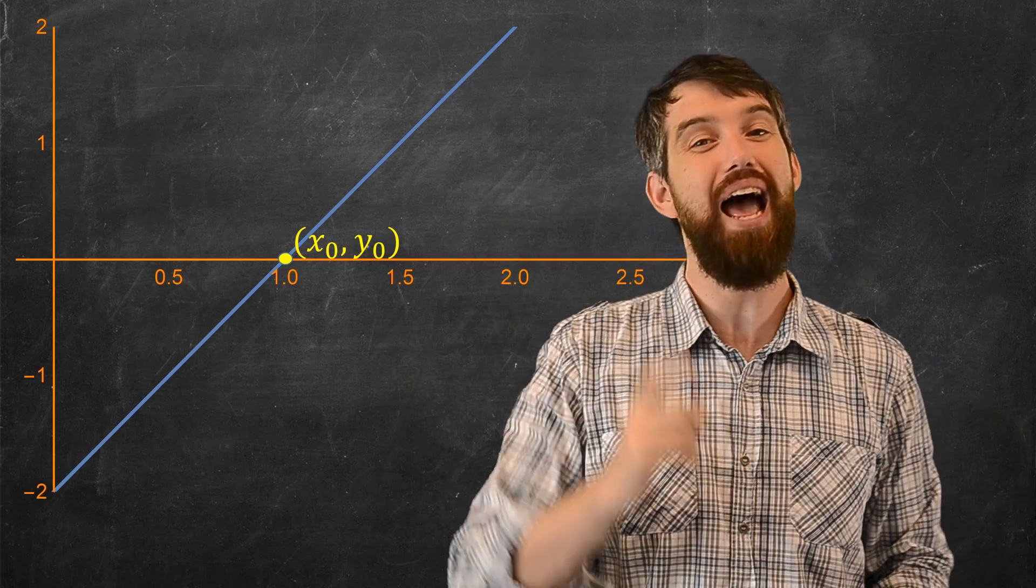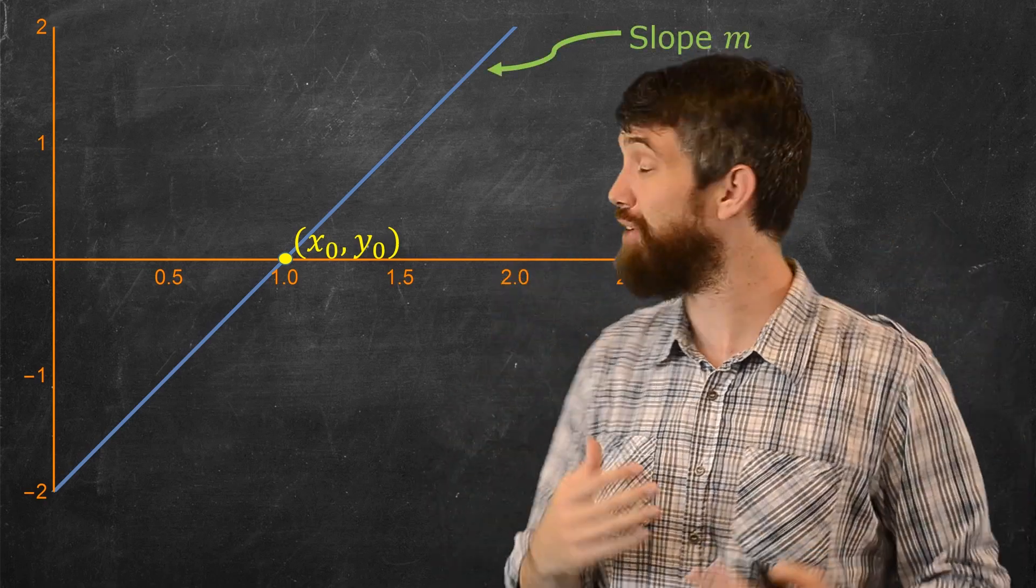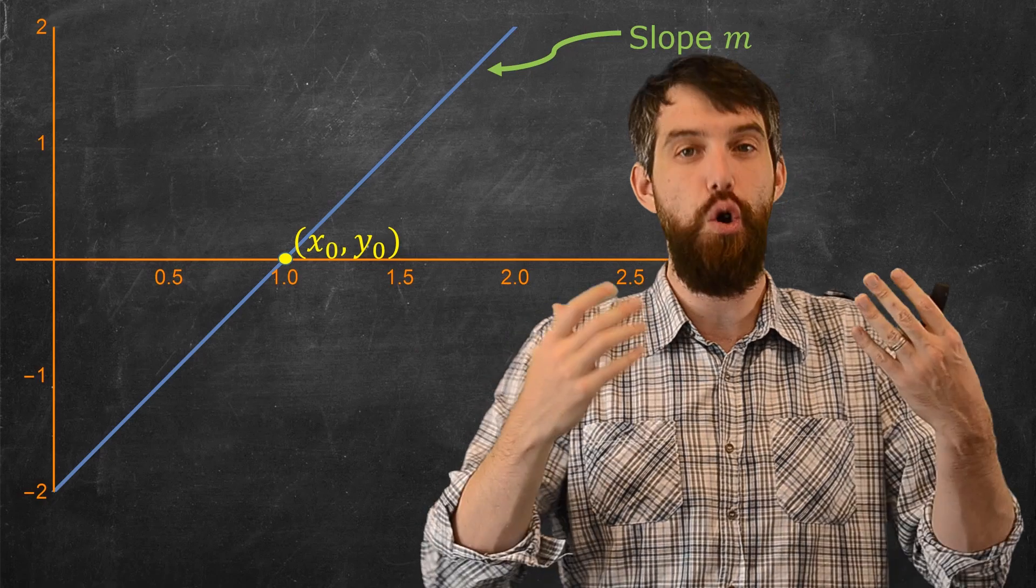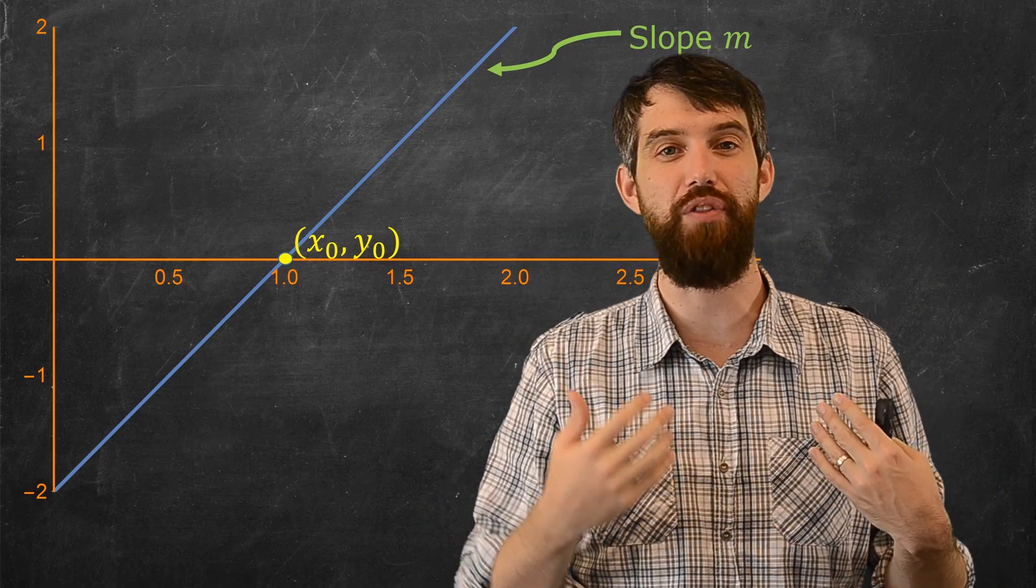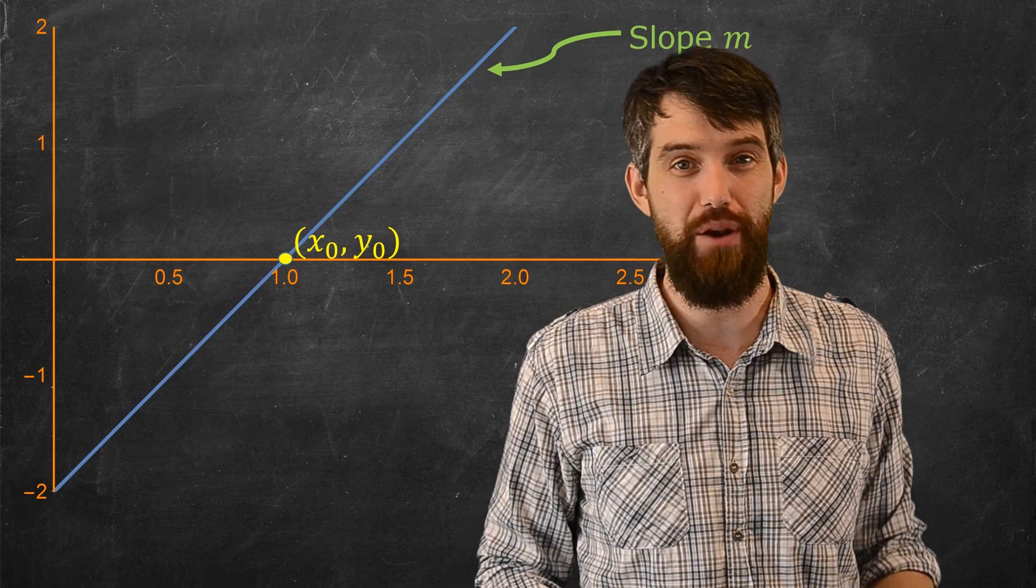And then, the second piece of information I need to have is I need to have the slope of this line. And my claim here is if I know what the slope of the line is, and I know some point on it, then I can write down the point-slope formula for the equation of a line.